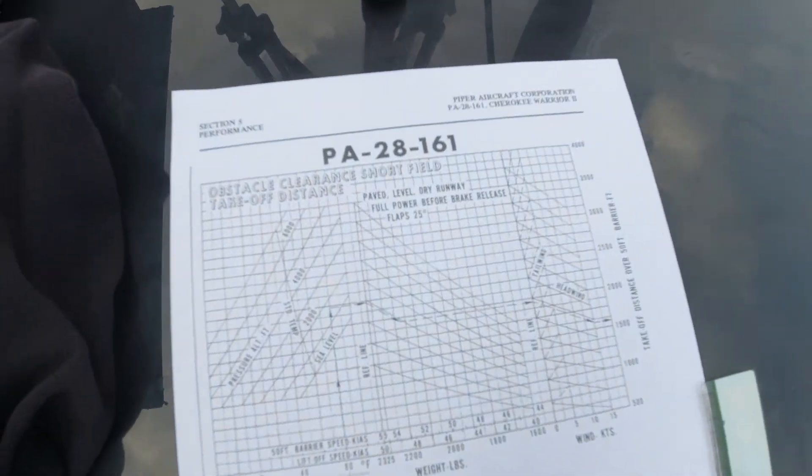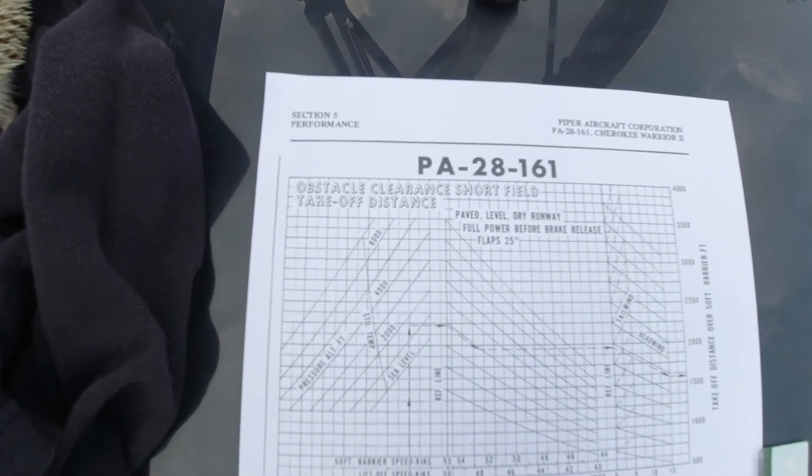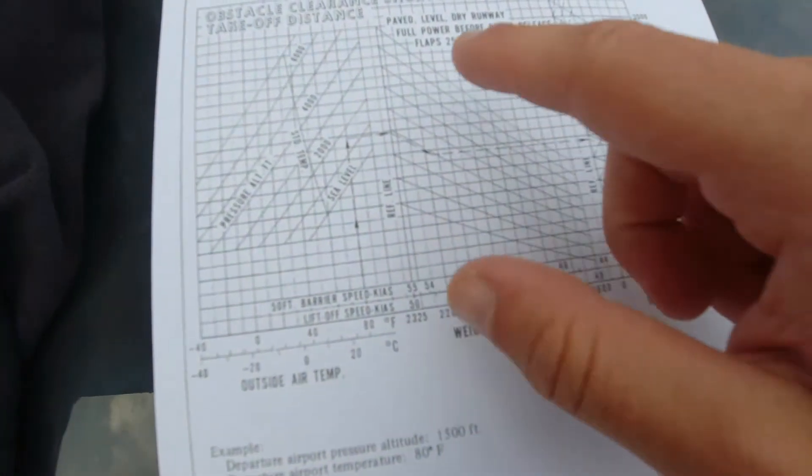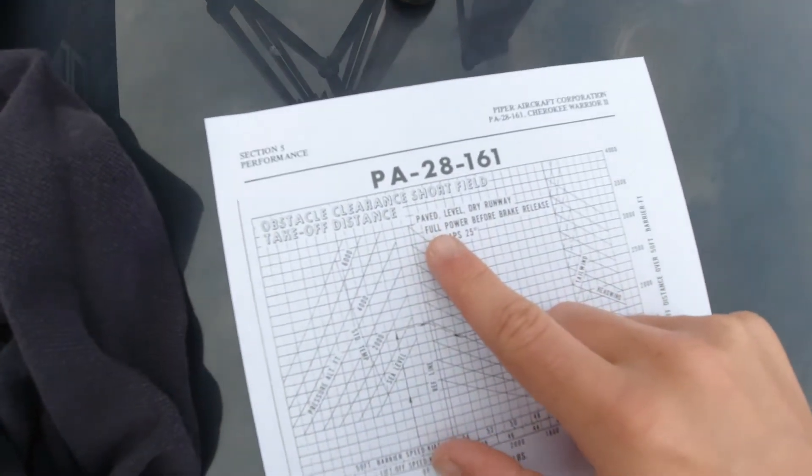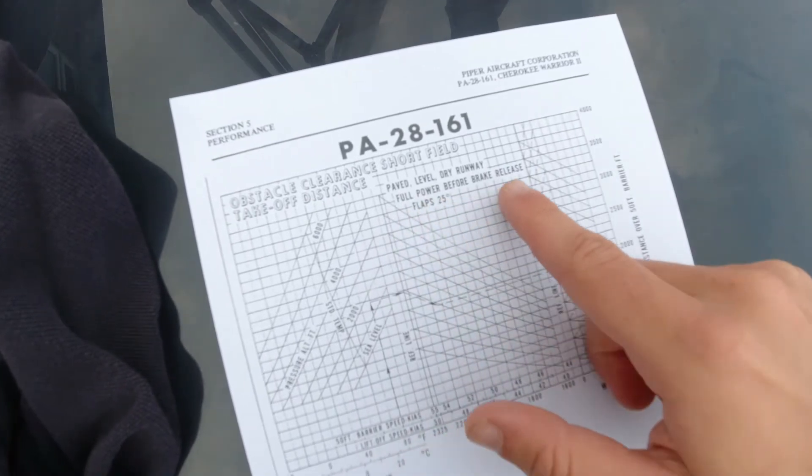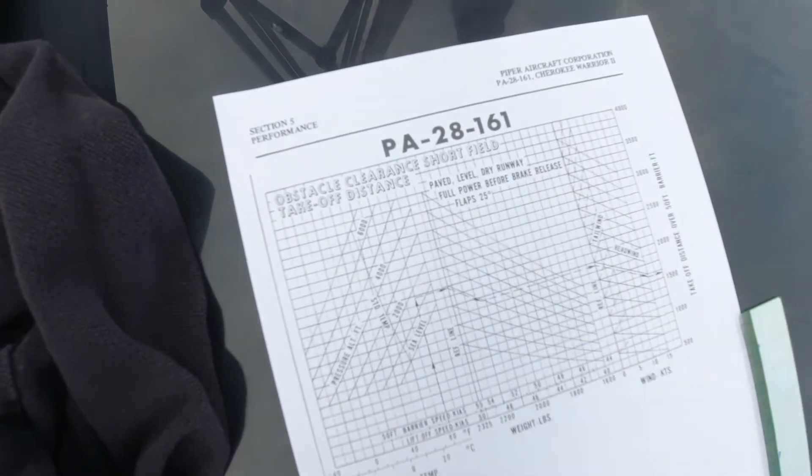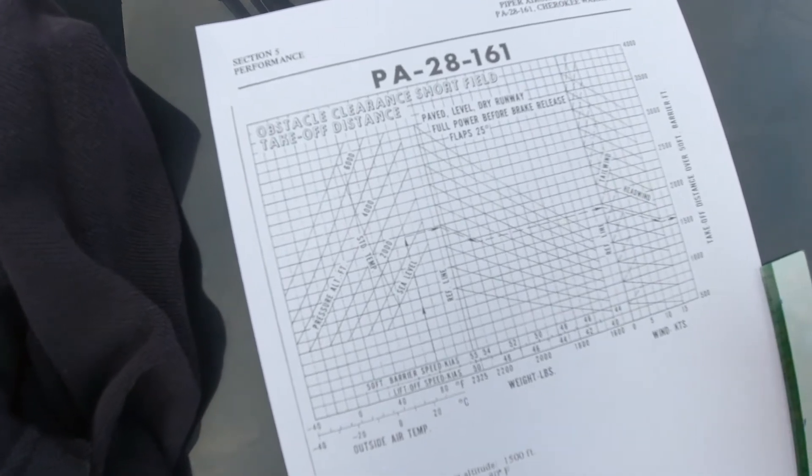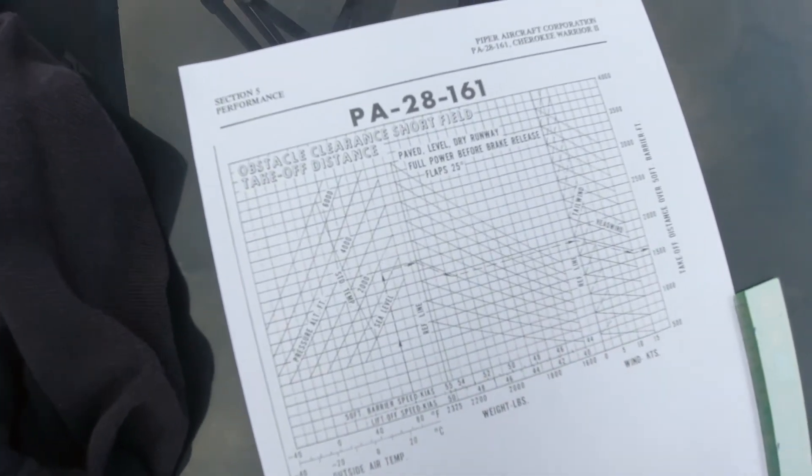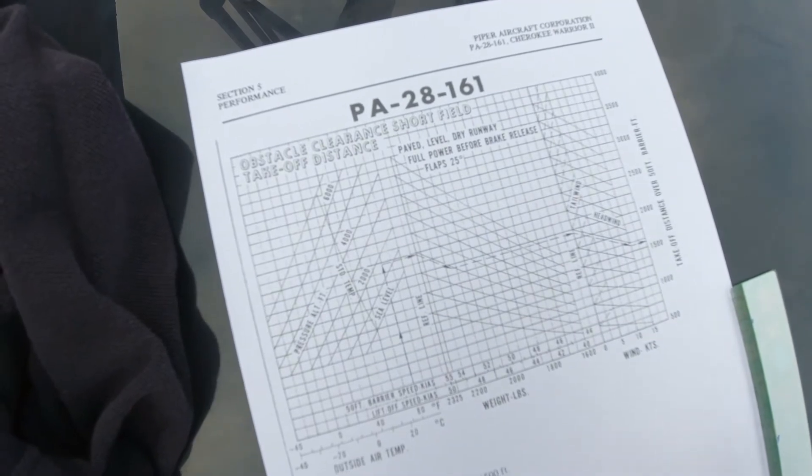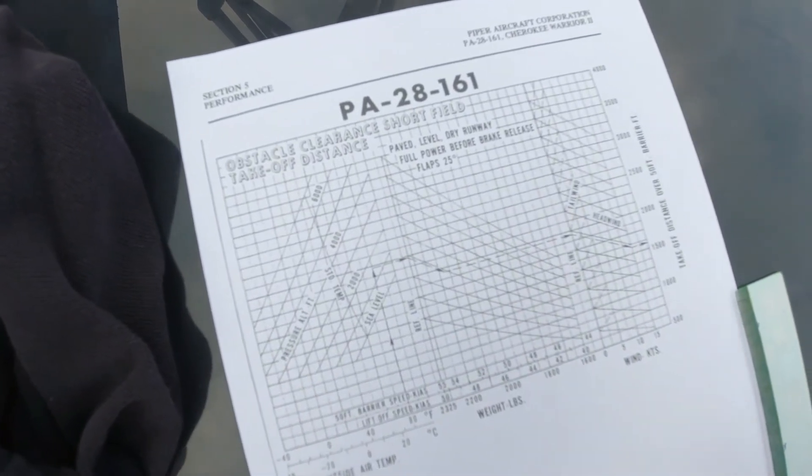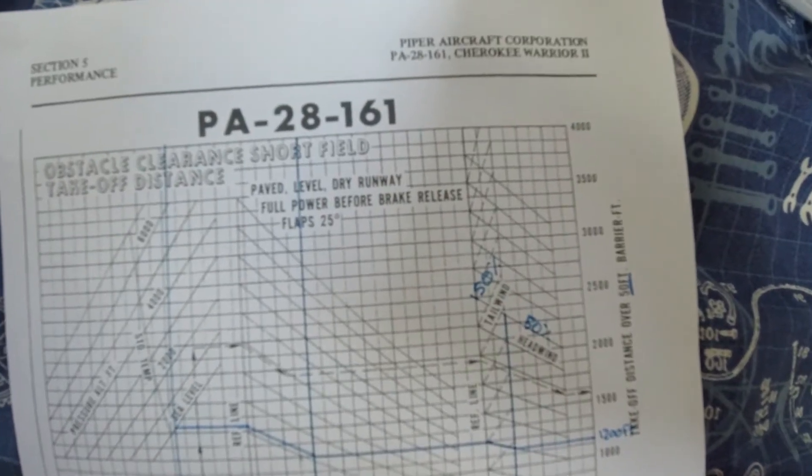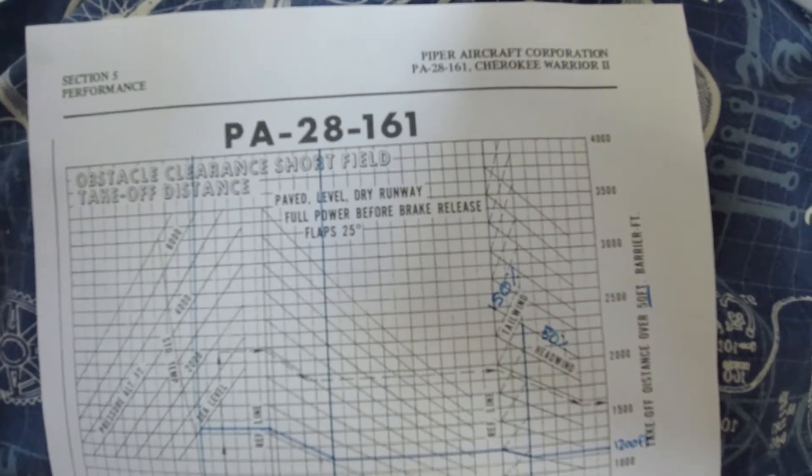For this particular demonstration I've chosen to use a short field takeoff distance, which here it specifies is a paved level dry runway, full power before brake release, and flaps 25 degrees. Each performance graph you look at will have its own specific set of conditions, and it's very important that you actually fly the aircraft in accordance with these conditions, because that's what's going to get you your performance. If any of those factors change, then the performance is going to change.